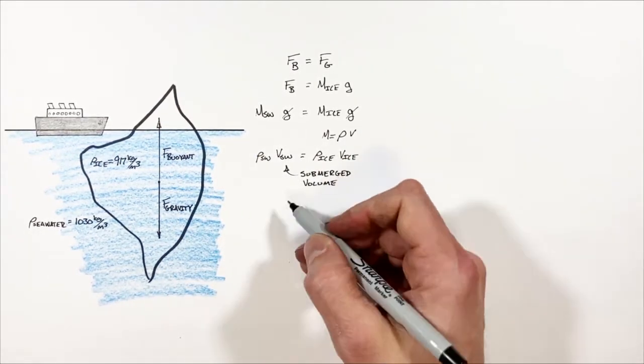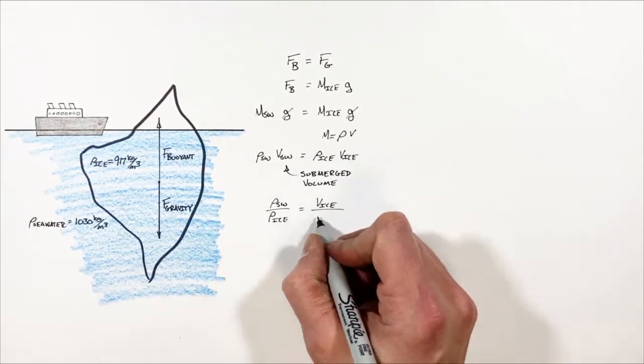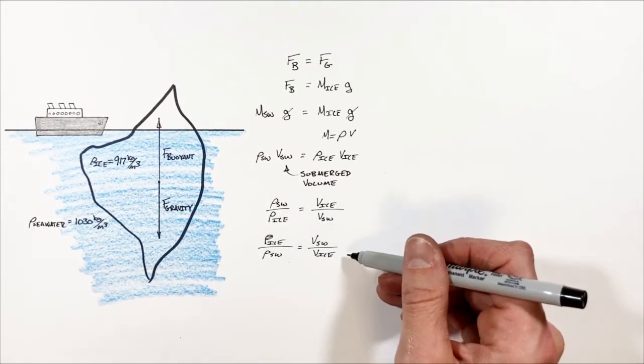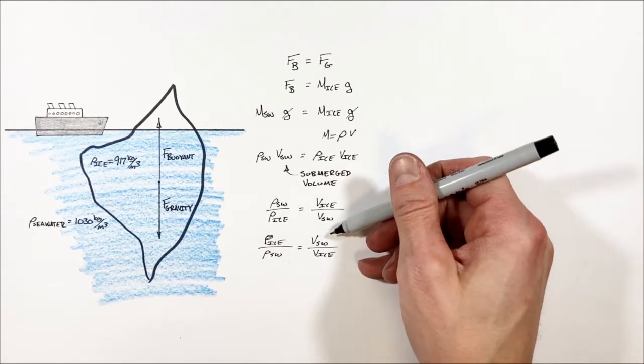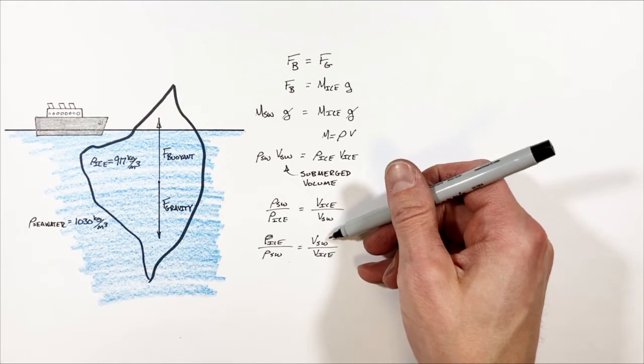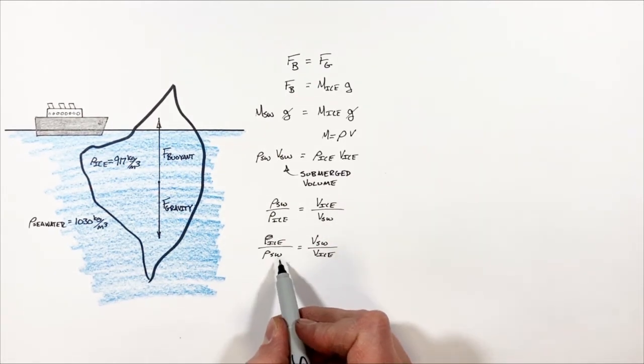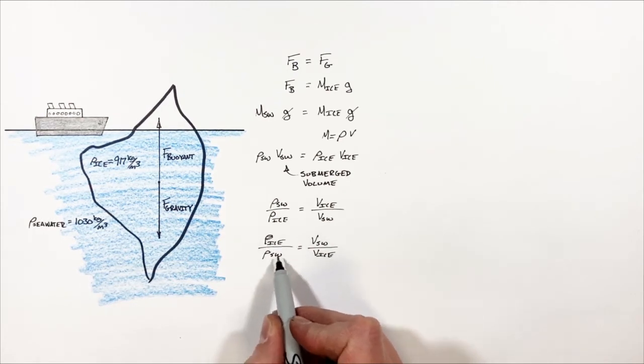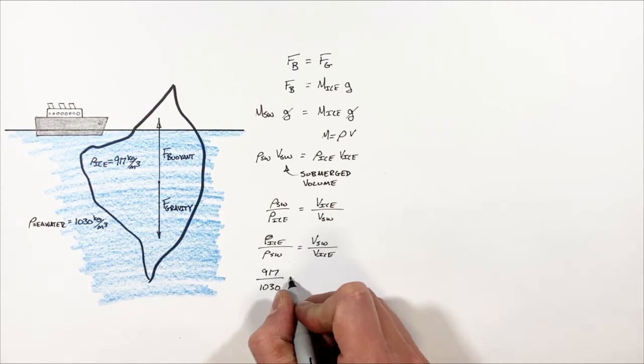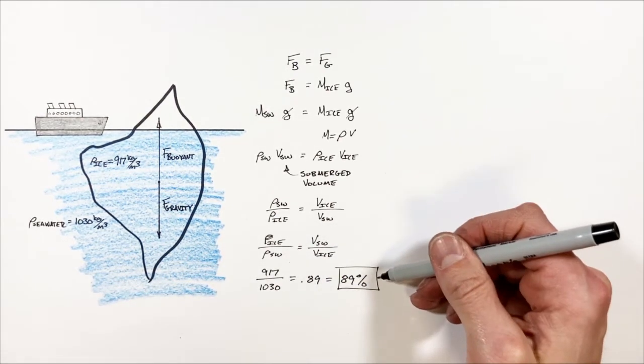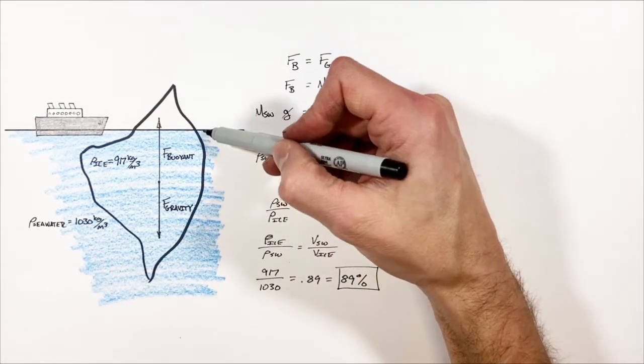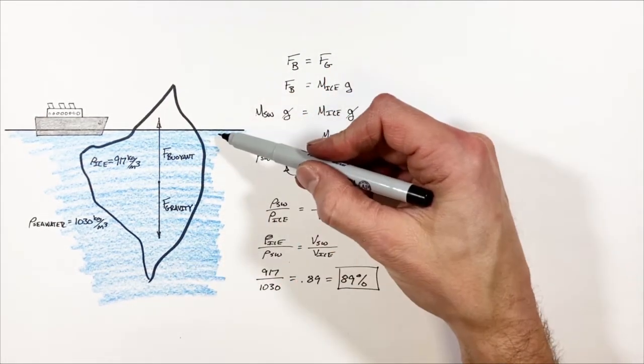So rearranging this equation slightly, this equation which is relating the amount of the iceberg which is submerged under the surface to the overall size of the iceberg. Now plugging in our values for the density of the ice and the density of the seawater, we find 89% of the iceberg is actually sitting underneath the surface of the water.